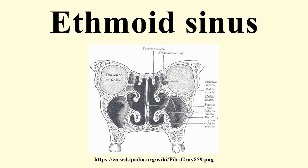They are divided into the anterior, middle, and posterior groups. The ethmoidal air cells consist of numerous thin-walled cavities situated in the ethmoidal labyrinth and completed by the frontal, maxilla, lacrimal, sphenoidal, and palatine bones.